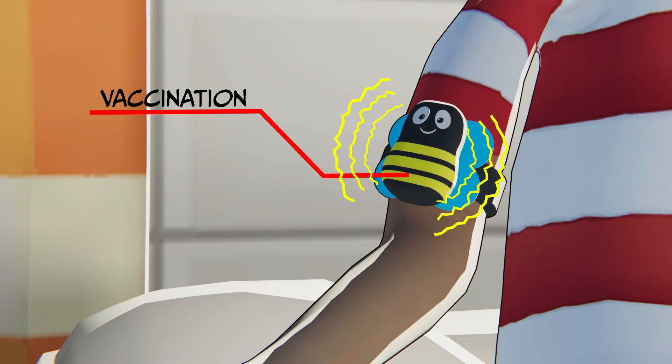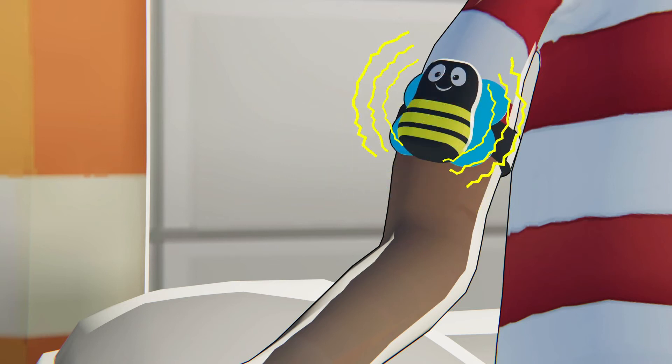For pokes that aren't going into a vein, like a vaccination, you can also put Buzzy right where the poke will be for 30 seconds, then move it up when it's time for the poke.